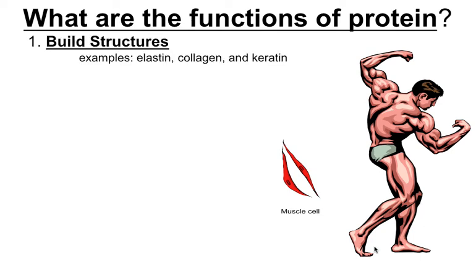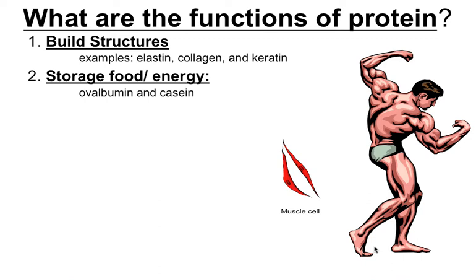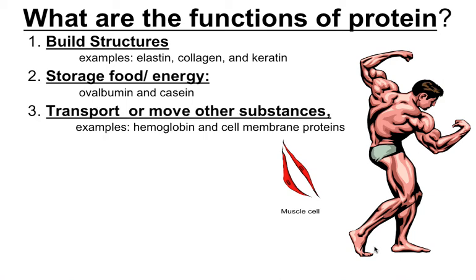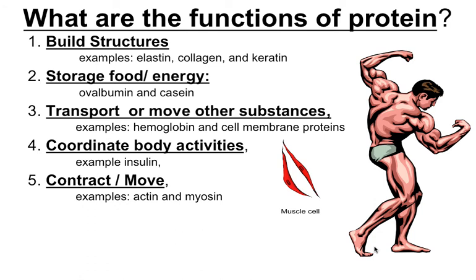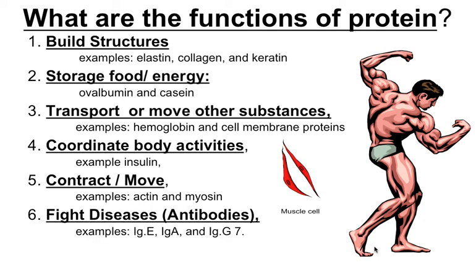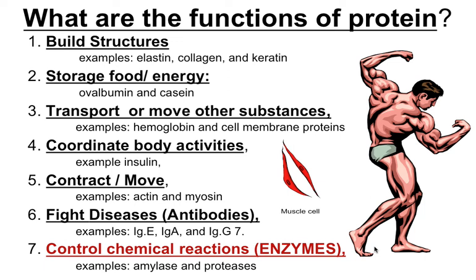There are seven functions of proteins. First, they build structures — for example, elastin, collagen, and keratin help build tissues, fingernails, skin, and connective tissues. Second, storage and food energy — we can actually use some proteins for energy as a last resort. Third, transport to move other substances — hemoglobin transports oxygen via the red blood cell, and cell membrane proteins do similar work. Fourth, they help coordinate body activities, like insulin helping to absorb sugars and rebuild muscle. Fifth, they contract and move — actin and myosin, which you'll learn a lot about in anatomy and physiology. Sixth, they help fight disease — antibodies are made of protein. Seventh, they help control chemical reactions inside the body — these are known as enzymes, and you'll notice their names end in 'ase' rather than 'in.'